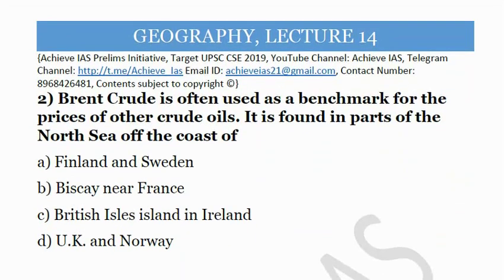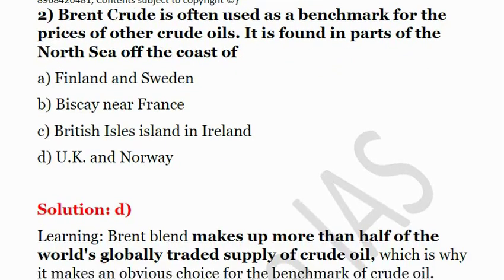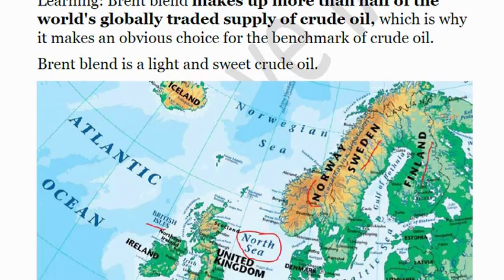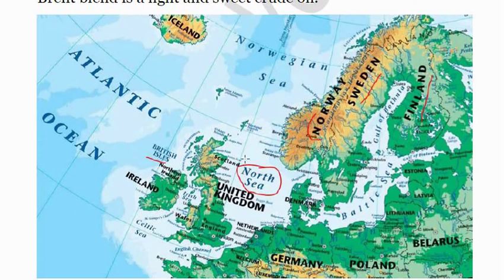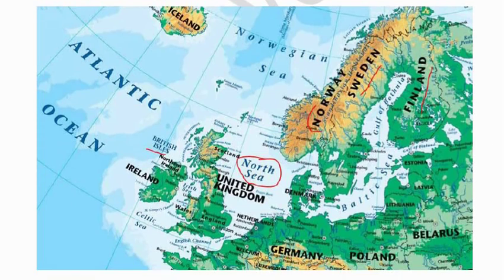The second question: Brent crude is often used as a benchmark for the prices of other crude oils. It is found in parts of the North Sea off the coast of which country? The options are A — Finland and Sweden, B — Bay of Biscay near France, C — British Isles in Ireland and UK, D — UK and Norway. The answer is D, that is UK and Norway. The Brent blend makes up more than half of the world's globally traded supply of crude oil. In the diagram you can see Finland, Sweden, and Norway, and between Norway and Britain is the North Sea where Brent crude oil is found. Please observe such maps carefully as these types of questions are often asked by the UPSC.